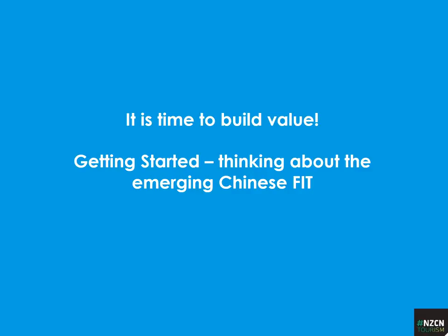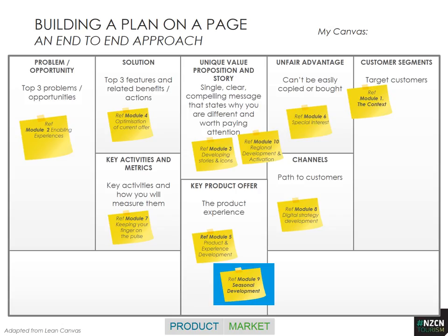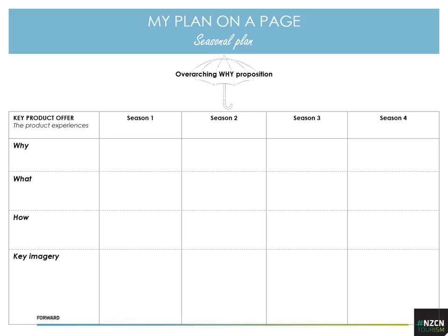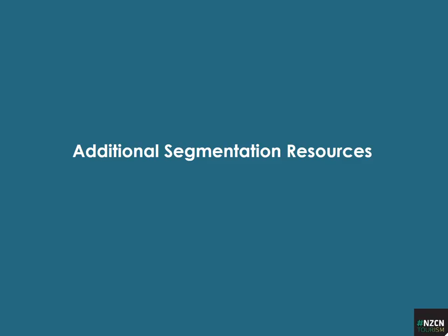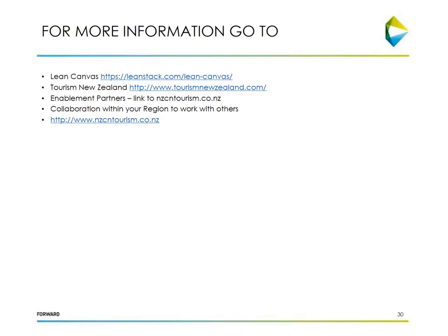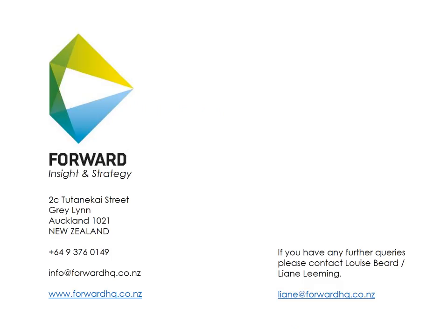That is a short overview. There is more information around seasonal development at the website nzcntourism.co.nz — go there if you would like more in-depth information. We also have some tools to help you plan. The seasonal module fits very much in developing the product offer, as part of the Lean Canvas plan, and our different modules help you build that. We suggest you break down what your seasonal offer is to help brief the development of your website product and promotional material. Good luck, and we hope you have real confidence to develop exciting seasonal offers.